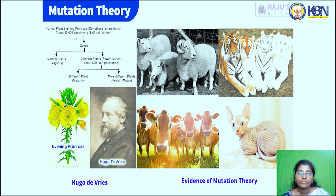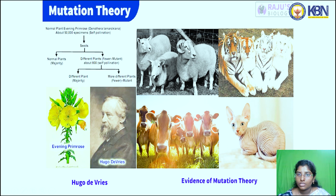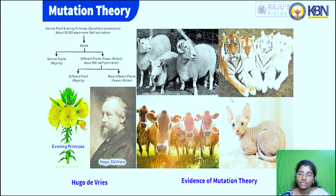Mutation Theory: in an experiment with evening primrose, about 50,000 specimens were self-pollinated from seeds. The majority produced normal plants, but about 800 plants were different. When these different plants were again self-pollinated, the majority produced different plants and even more varied plants from fewer. By mutation theory, a change in DNA gives a different structure to organisms. Changes in genes — mutations — cause different structures, such as sheep with longer legs, or tigers with different color variations due to gene mutation.